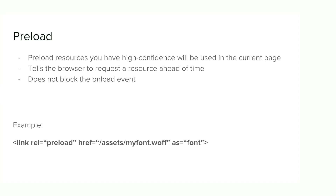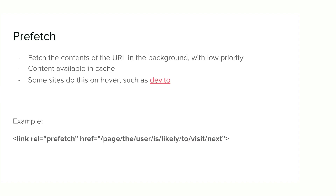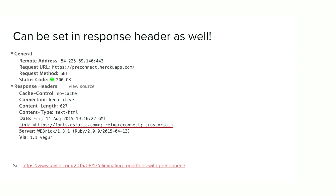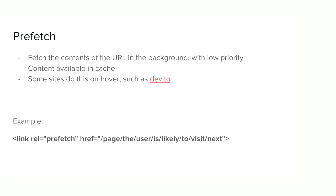Here's an example of how you can do it if you know you'll need a particular font. Sites like dev.to use prefetch — when you visit the site and hover over links, it prefetches those pages in the background. It sends a low-priority request to that address, and everything it returns goes into the browser cache, so it feels a lot faster. This should be used if you're confident the user might end up on that page. You can do this in your HTML by setting the link attribute with rel='prefetch'.